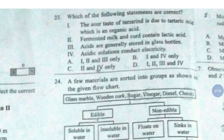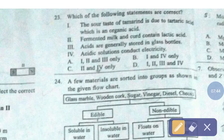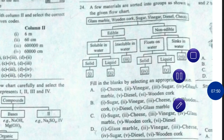Question number 23. Which of the following statements are correct? First, the sour taste of tamarind is due to tartaric acid which is an organic acid. Second, fermented milk and curd contains lactic acid. Third, acids are generally stored in glass bottles. Fourth, acidic solutions conduct electricity. The correct answer is option number D — first, second, third and fourth.